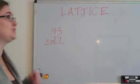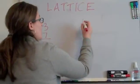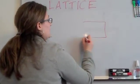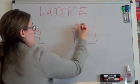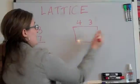We're going to try multiplying 43 times 27. So first, I'm going to draw a box. I'm going to put the first number at the top and the second number, 27, on the side.